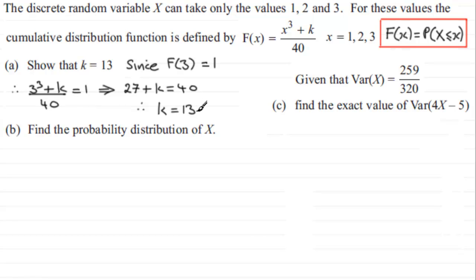Now in Part B we need to find the probability distribution of X. So in other words, we've got to form a table with our observed values x and the probability that our random variable X equals each of these observed values. And those observed values are going to be 1, 2, and 3.